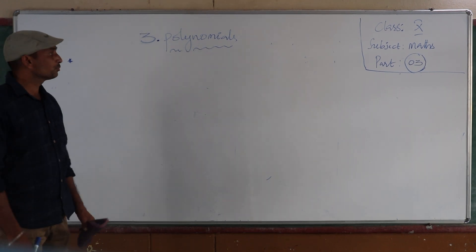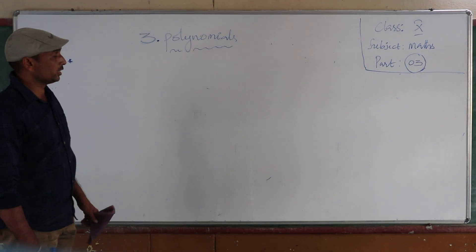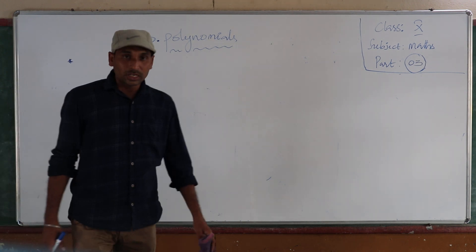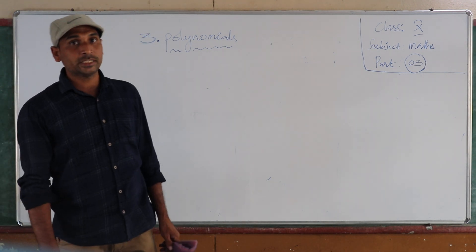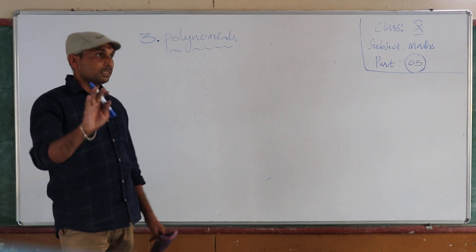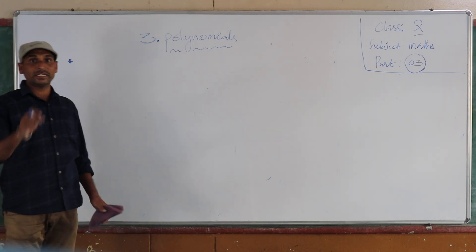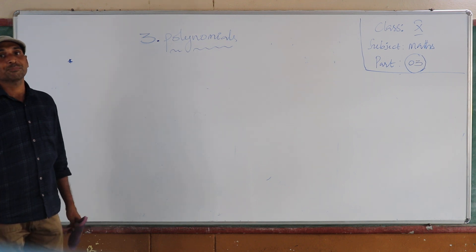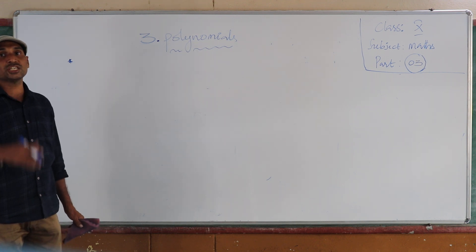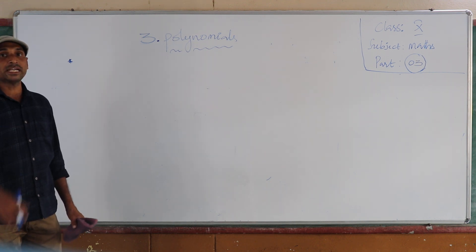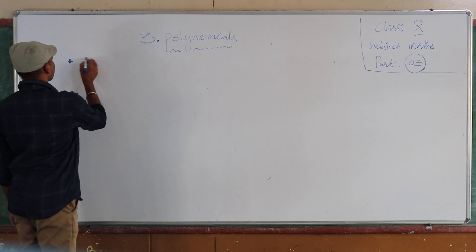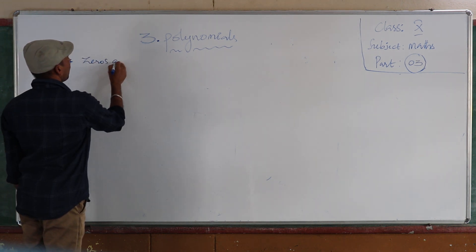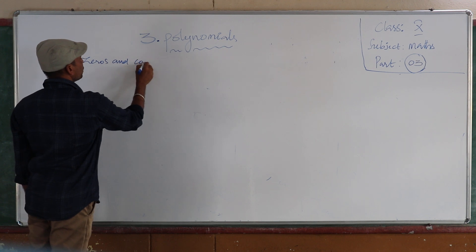OK children, so the second topic is graphical representation, but about that we will discuss later. The next topic is the relationship between zeros and coefficients.